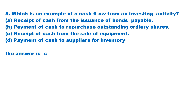Question 5. Which is an example of a cash flow from an investing activity? A. Receipt of cash from the issuance of bonds payable. B. Payment of cash to repurchase outstanding ordinary shares. C. Receipt of cash from the sale of equipment. D. Payment of cash to suppliers for inventory. The answer is choice C.